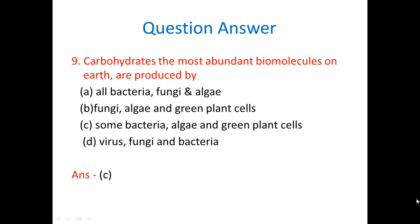Carbohydrates, the most abundant biomolecules on earth, are produced by all bacteria, fungi and algae. Fungi, algae and green plant cells. Some bacteria, algae, green plant cells. Virus, fungi and bacteria. So correct option is C, some bacteria, because there are some bacteria which is autotrophic, blue-green bacteria is there which is producing carbohydrate. Algae is producing carbohydrate and at the same time green plants. Carbohydrates are produced by those things which are autotrophs, which could make their own foods. So C option is correct one.